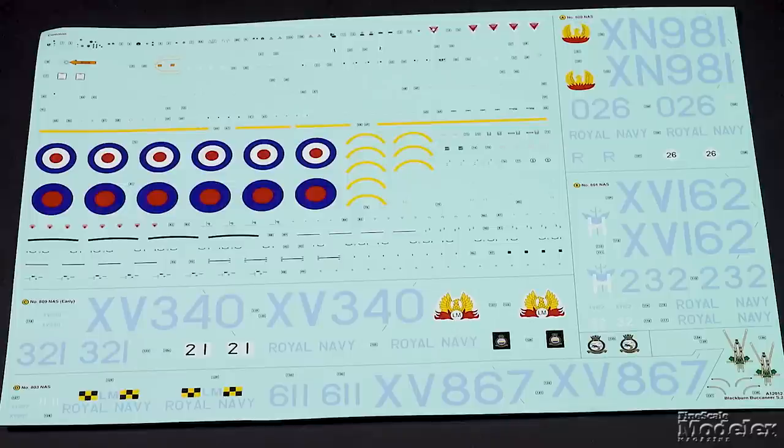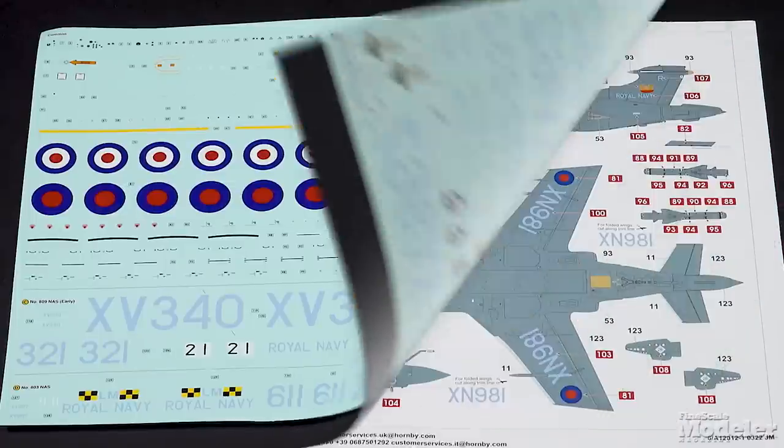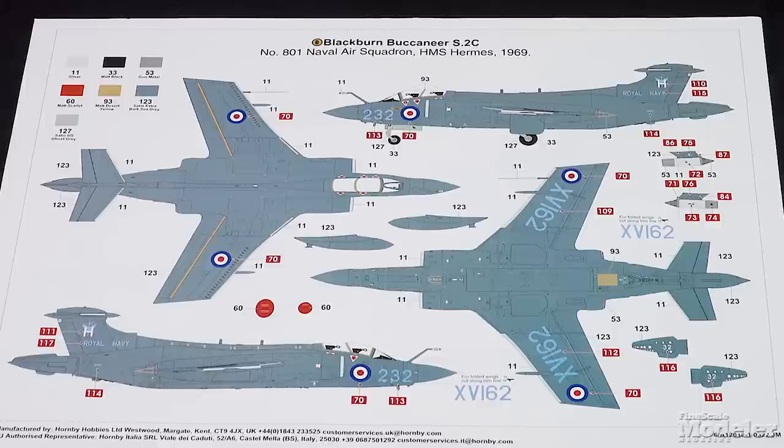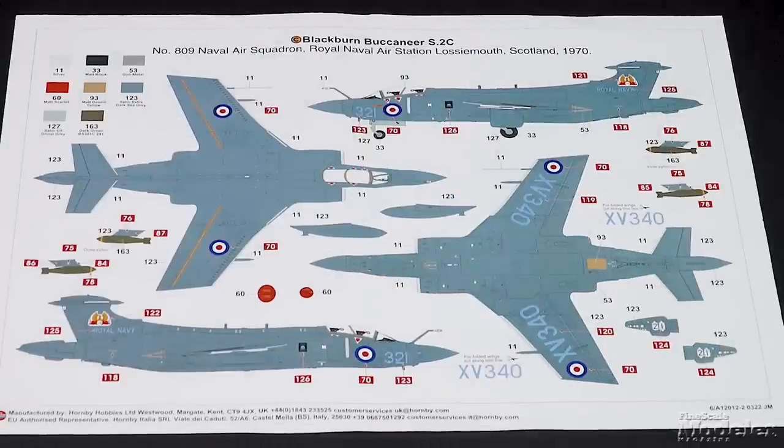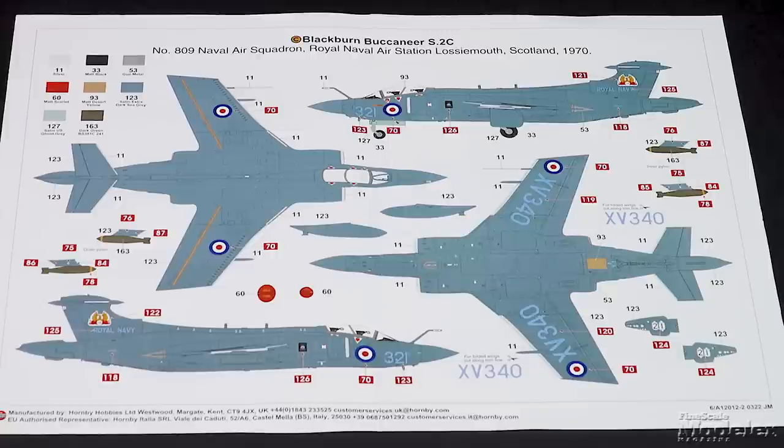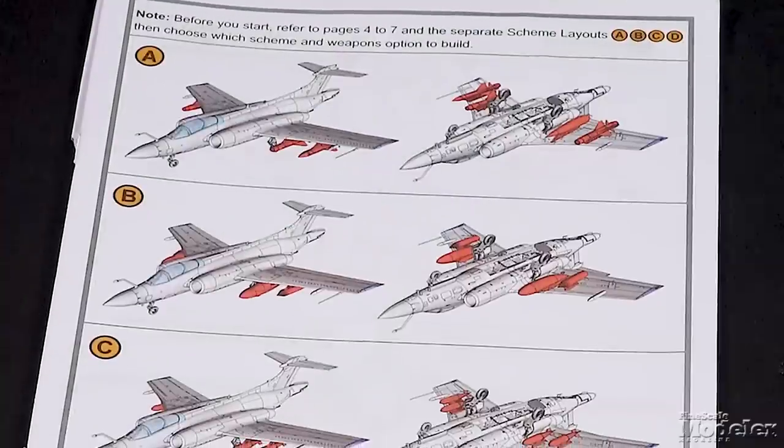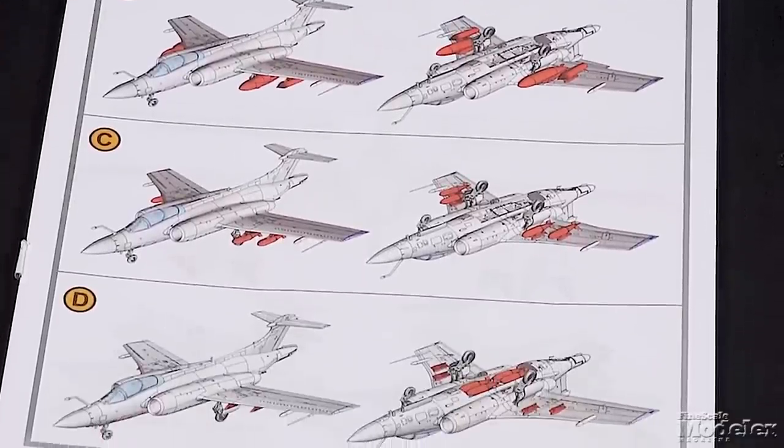Cartograph decals provide stencils, seat belts, cockpit dials and placards, and four marking options: a number 809 Naval Air Squadron S2D aboard HMS Arc Royal in 1978, an S2C from number 801 Squadron on HMS Hermes in 1969, another S2C from number 809 Squadron at Royal Naval Air Station Lossiemouth in 1970, and a number 803 Squadron S2C at Lossiemouth in 1969. You need to decide early which scheme to build, as it affects the weapons loadout.